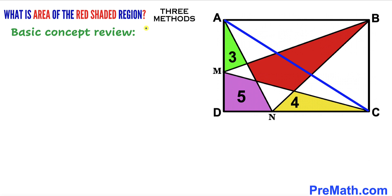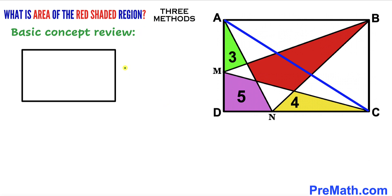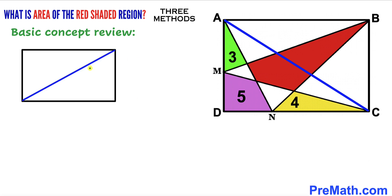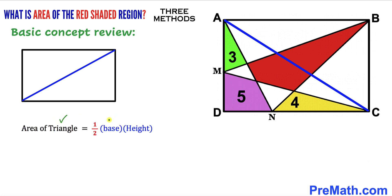Before we proceed, let's go over the basic concepts. Let's focus on this rectangle and recall the area of a rectangle formula: area equals length times width. The blue diagonal divides the rectangle into two equal parts — two congruent triangles. Recall the area of a triangle formula: area equals half times base times height.